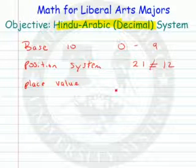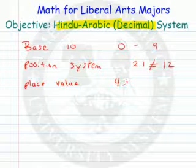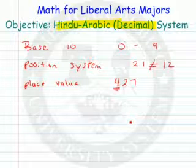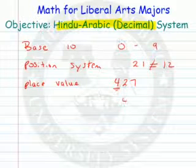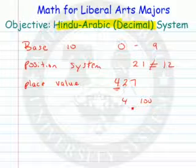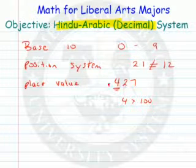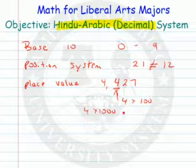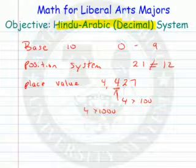So if you have a number like 427, the 4 is very important when it's located there, as opposed to someplace else. This 4 has a value of 4 100s, or 400. If you put the 4 here, now it has a value of 4 in the 1,000s, so now it's worth 4,000. So its place value is very important.